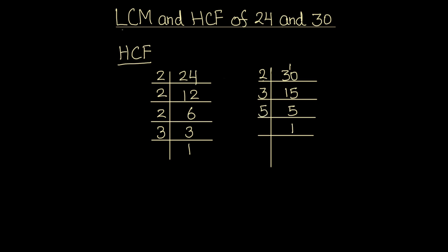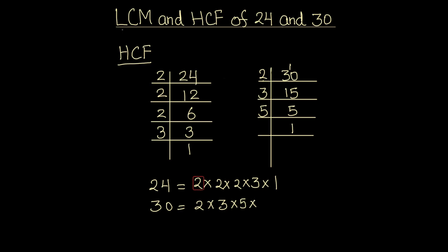So now both the numbers are fully divided. For finding the HCF, we are going to first write the factors of the two numbers. The factors of 24 are 2 × 2 × 2 × 3, and the factors of 30 are 2 × 3 × 5.